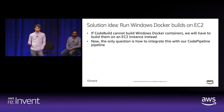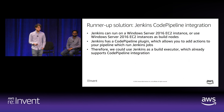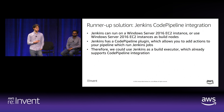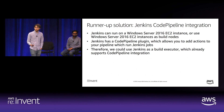All of our discoveries led us to conclude that CodeBuild cannot be used to build Windows Docker containers yet, so we'd have to build them on an Amazon EC2 instance. The question was how to integrate this container build with the rest of our CodePipeline. We considered Jenkins, which can run on an EC2 instance running Windows Server 2016. There exists an AWS CodePipeline plugin for Jenkins, so we could use Jenkins as a build executor with CodePipeline integration.